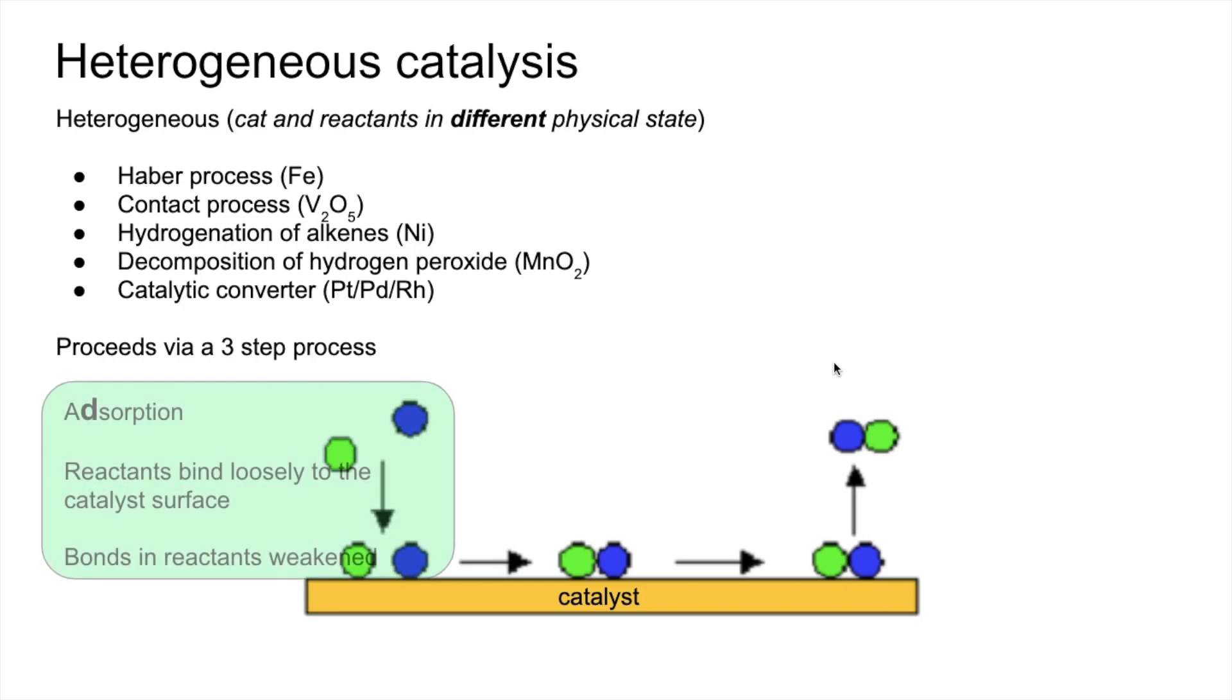So the first part of the process is adsorption, not absorption. So the reactants bind loosely to the catalyst surface and that weakens the bonds in the reactants. Part two, very straightforward, reaction takes place. Collisions occur between the reactants and the products are formed.